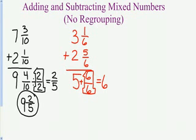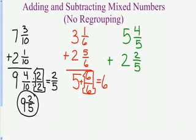My next example is 5 and 4 fifths. I'm going to add 2 and 2 fifths. 4 fifths plus 2 fifths is 6 fifths. My whole numbers, 5 plus 2 is 7. So, now I have 7 and 6 fifths. That 6 fifths is an improper fraction.